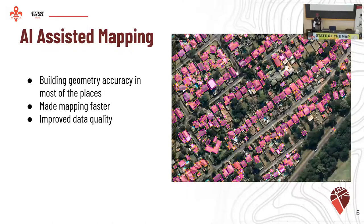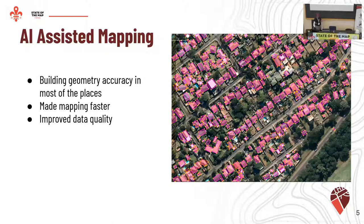Some of the things we really liked about the AI-assisted mapping: one, there was better geometry accuracy in most places. I know there have been some controversies in some areas not being done as well, but honestly on a larger scale, it was better accuracy. And of course it made mapping much faster for everyone, as I already shared earlier.